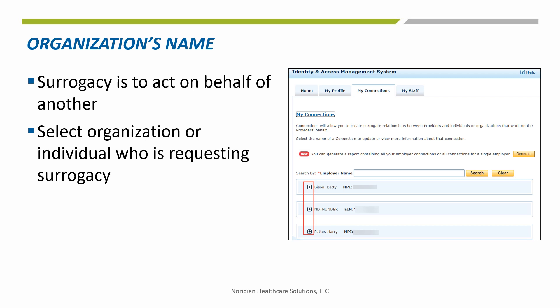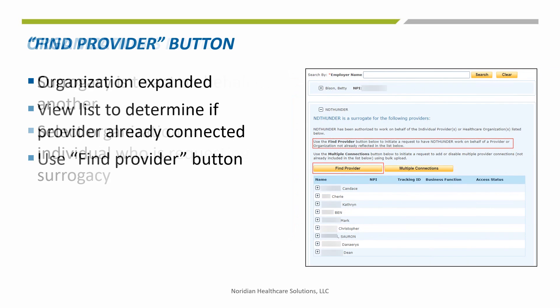A surrogate is someone who will act on behalf of another person or organization. On the My Connections page, click on the plus sign located to the left of the organization's name that desires to act on behalf of the provider. The organization selected will expand. View the resulting list to determine if the provider is already connected. If they are not, use the Find Provider button.